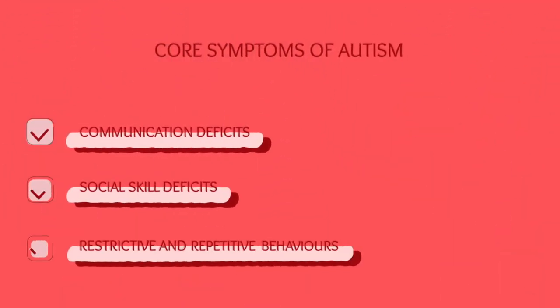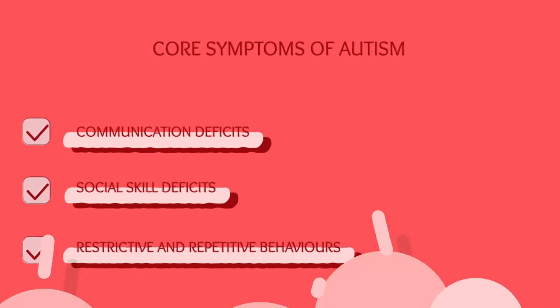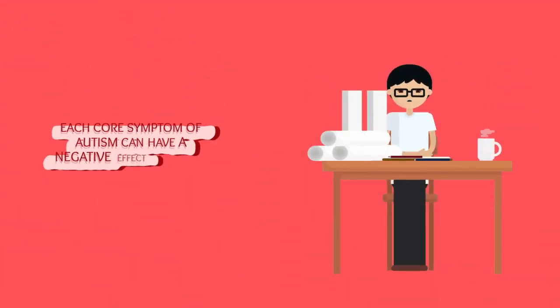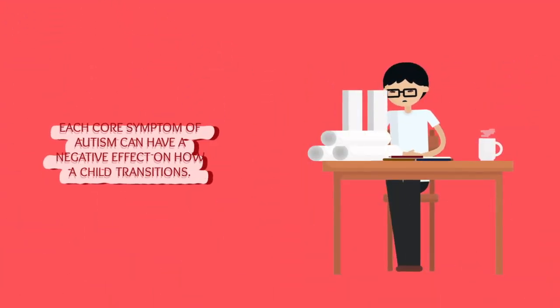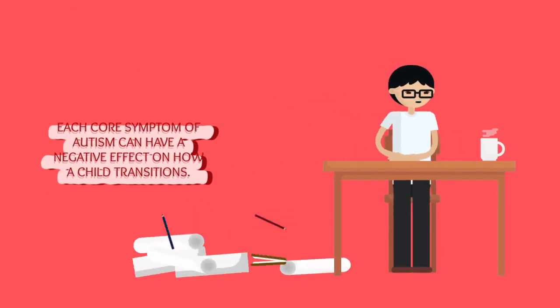Core symptoms of autism include communication deficits, social skills deficits, and restrictive and repetitive behaviours. Each of the core symptoms of autism can have a negative effect on how a child transitions.